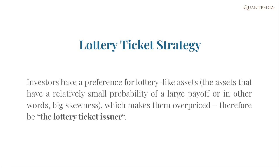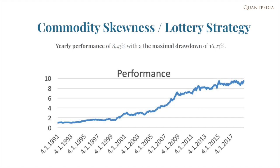Additionally, commodities as an asset class are quite distinct from equities, and therefore they can often be used as a diversifier for equities. Clearly, this strategy is profitable. A dollar invested in 1991 would result in more than $9 by 2019, which results in a yearly performance of nearly 8.5%. Moreover, the risk of this strategy is relatively low, with a maximal drawdown of around 16%. This results in a return-to-drawdown ratio of slightly more than 0.5.